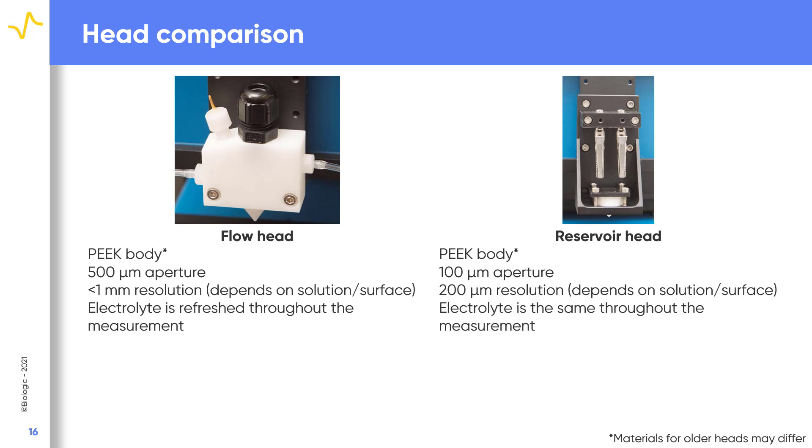When the flow head is used, the electrolyte is continually refreshed throughout the measurement. While when using the reservoir head, the electrolyte remains unchanged during the measurement.